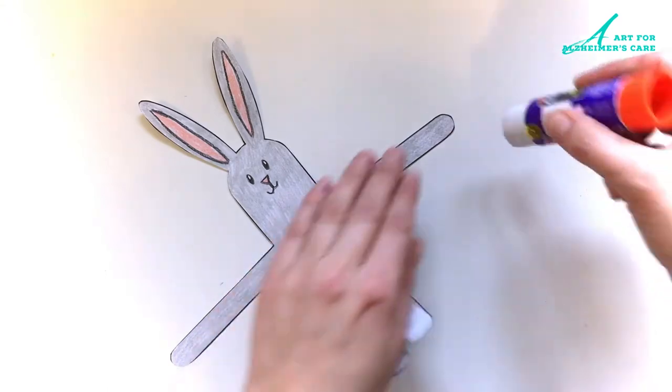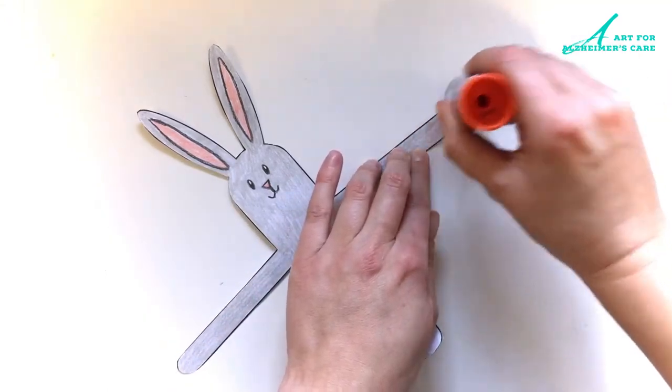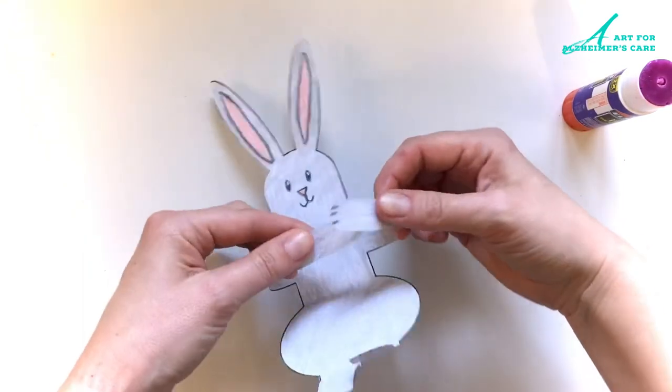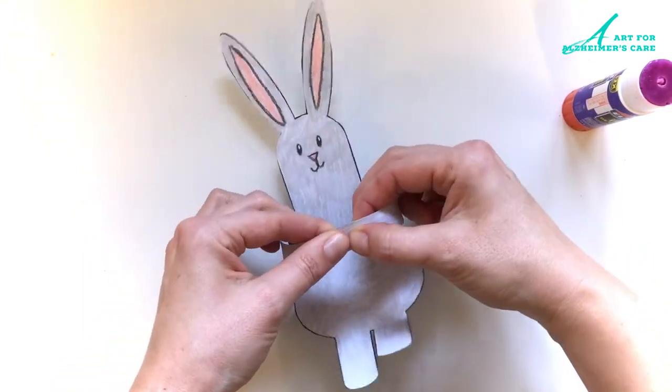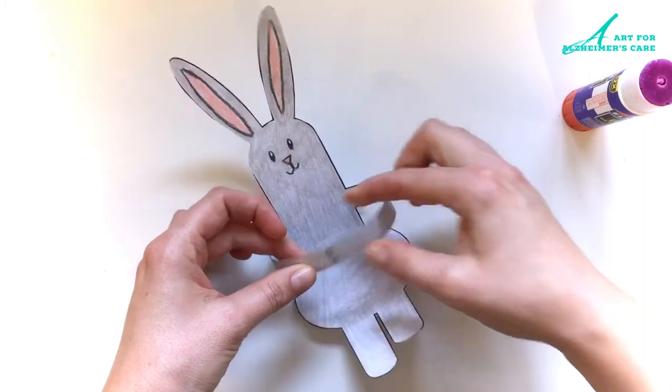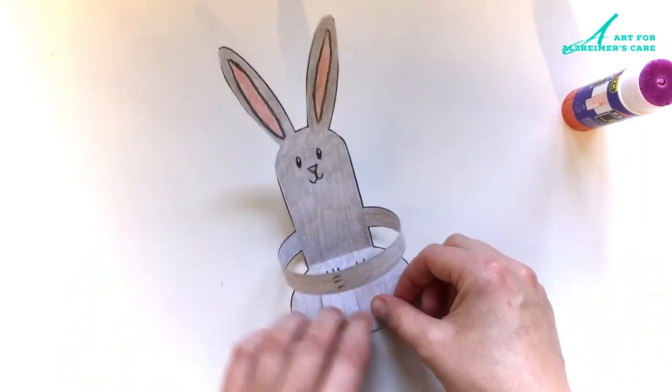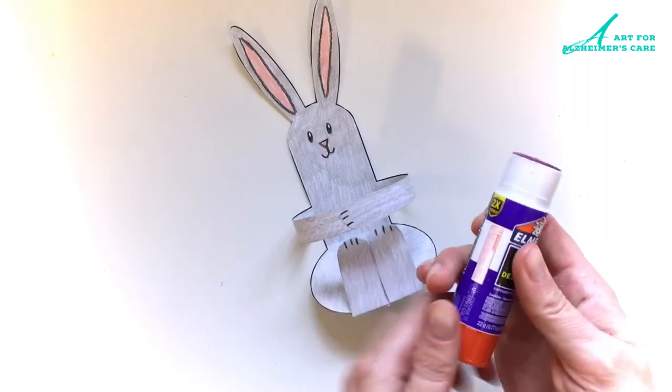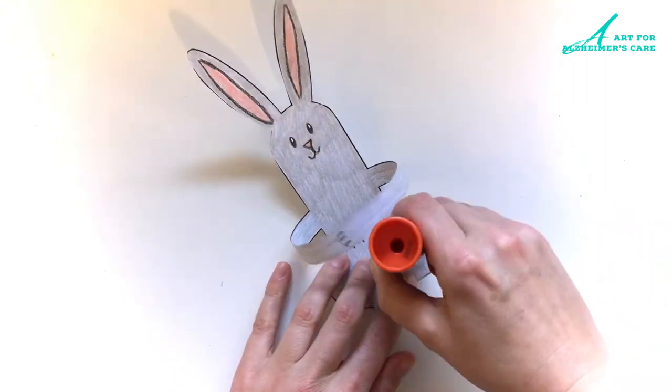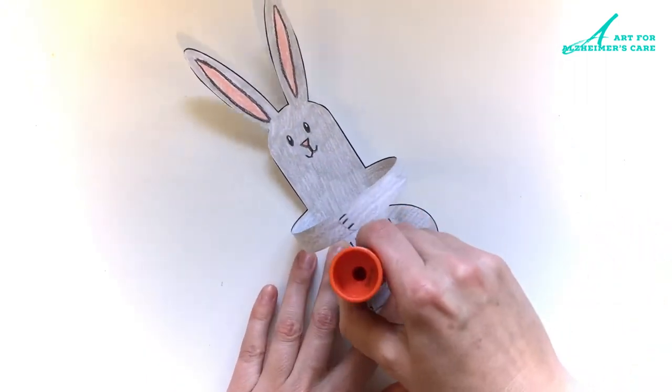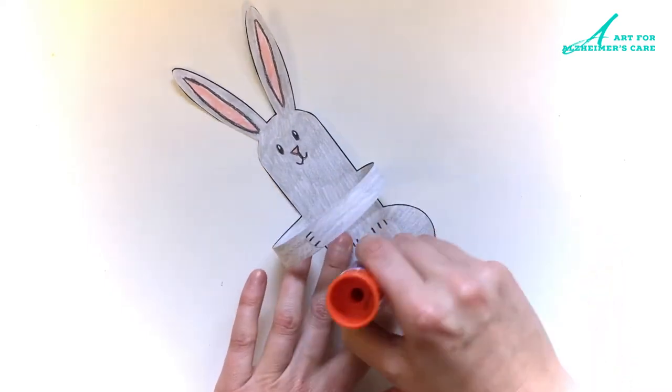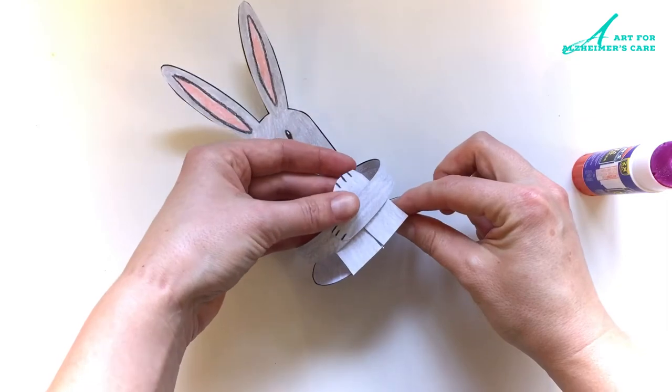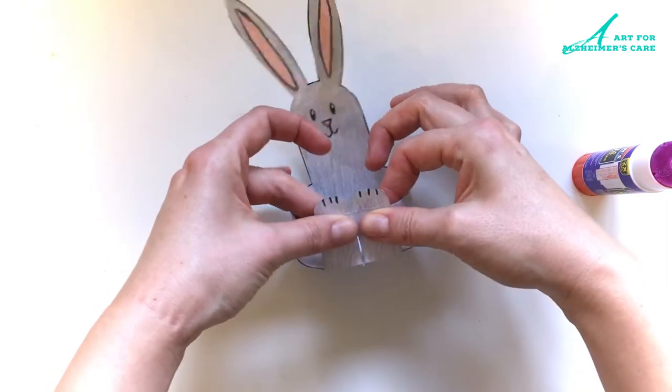After you have those folds made, you can glue the hands together and then you can put some glue on the legs and tuck them up under the hands like so.